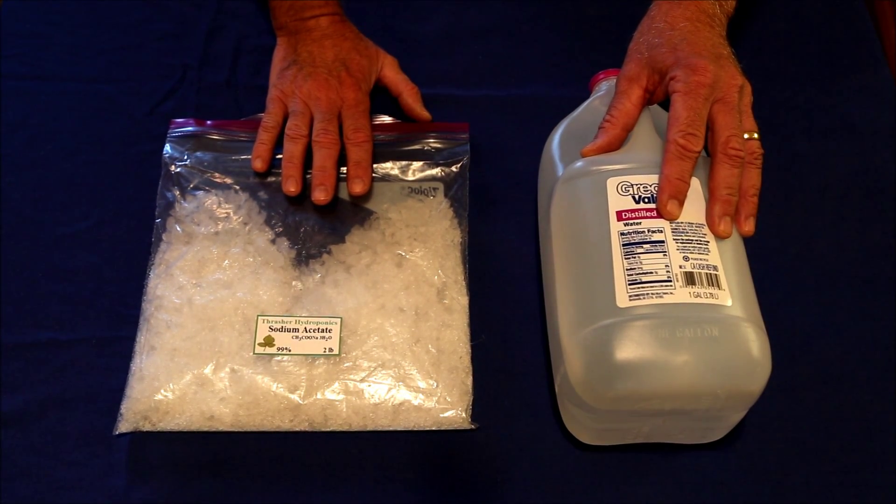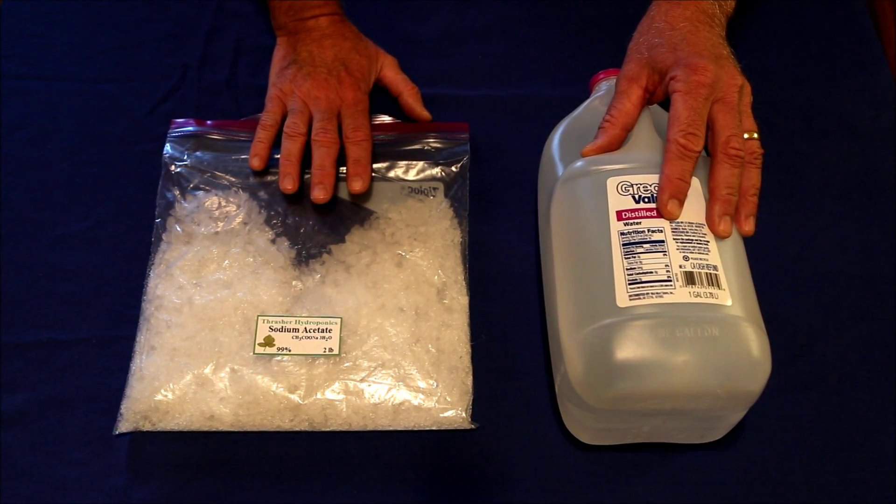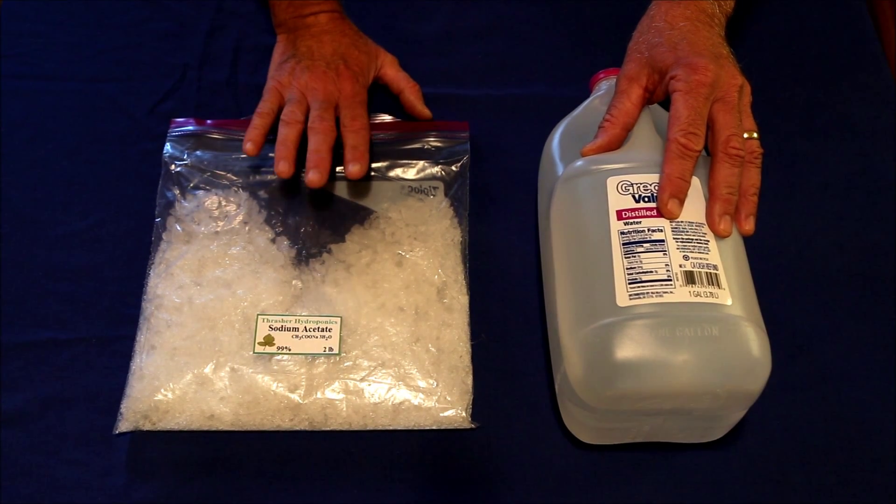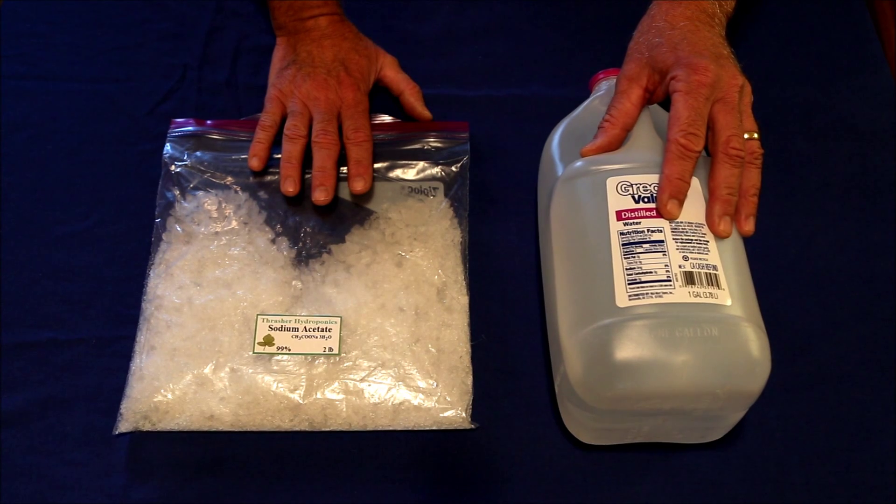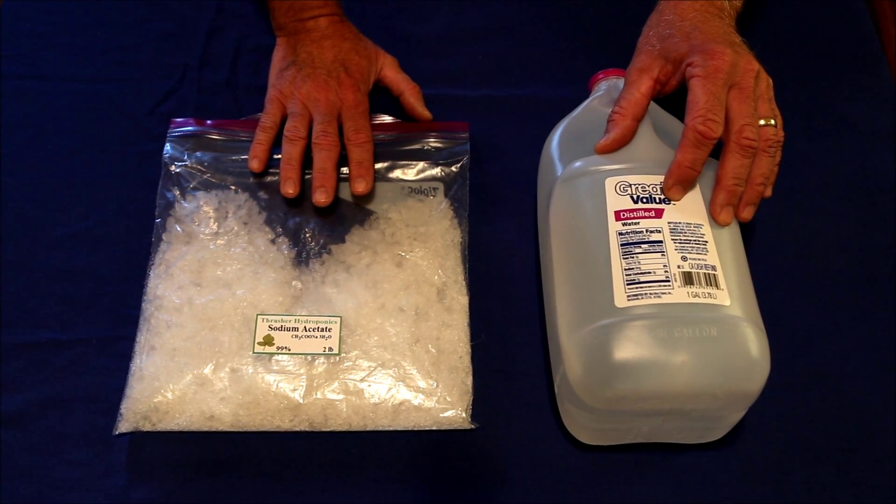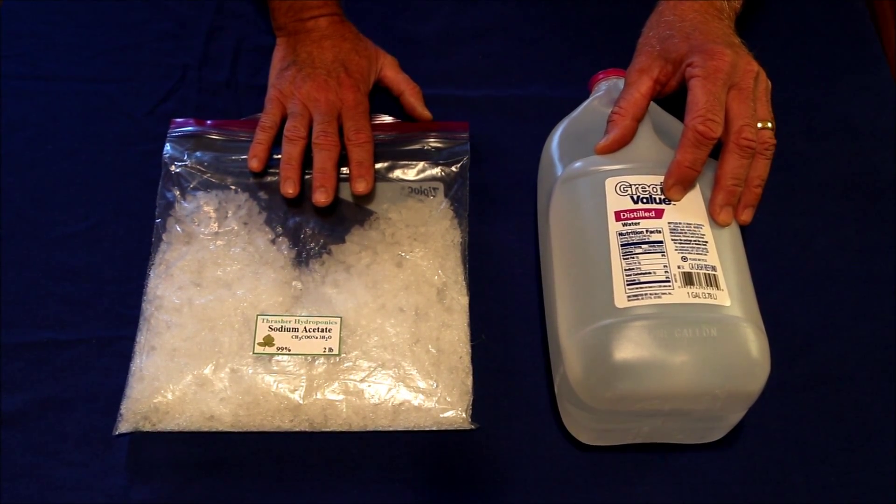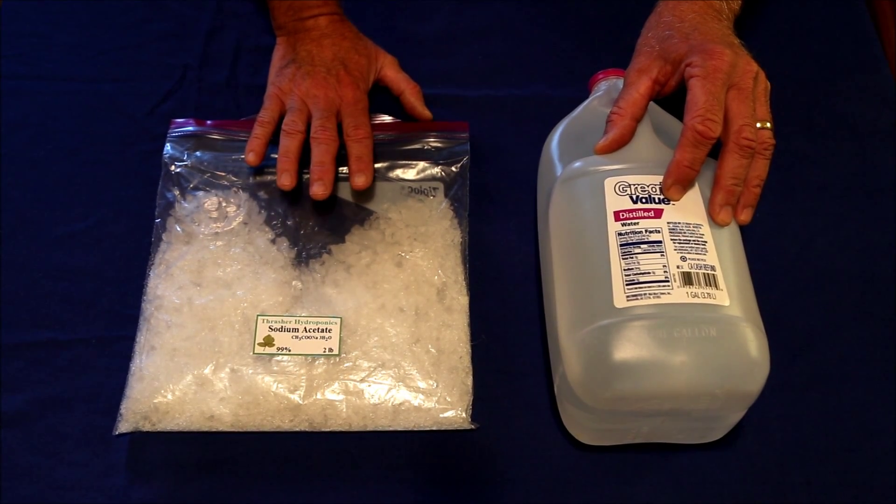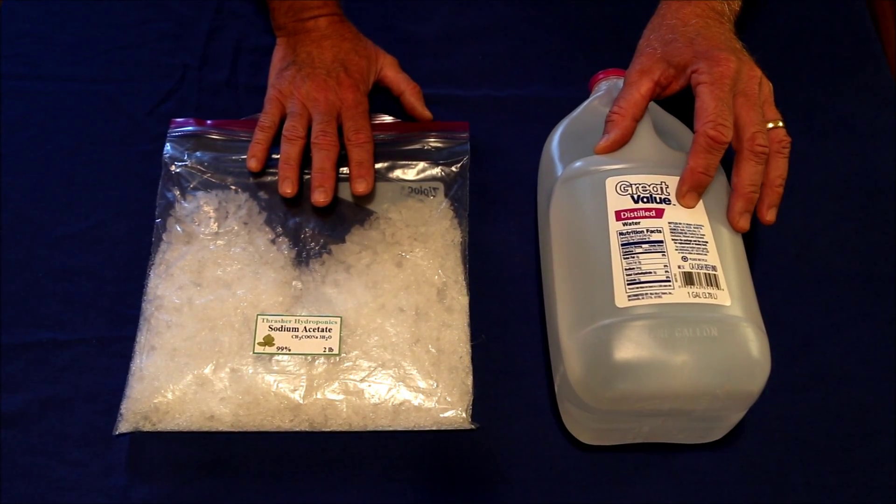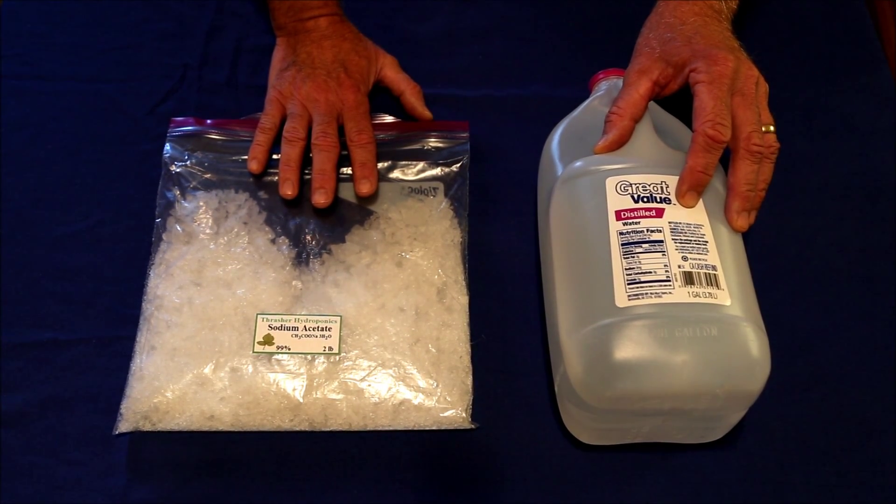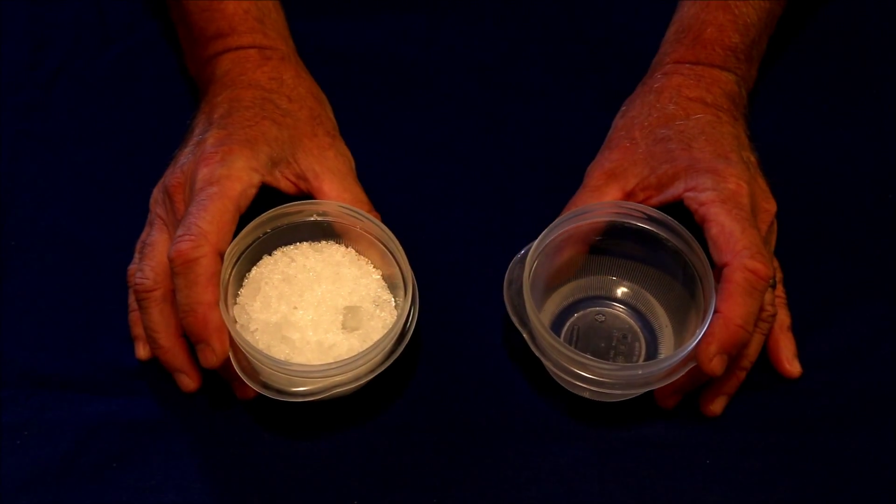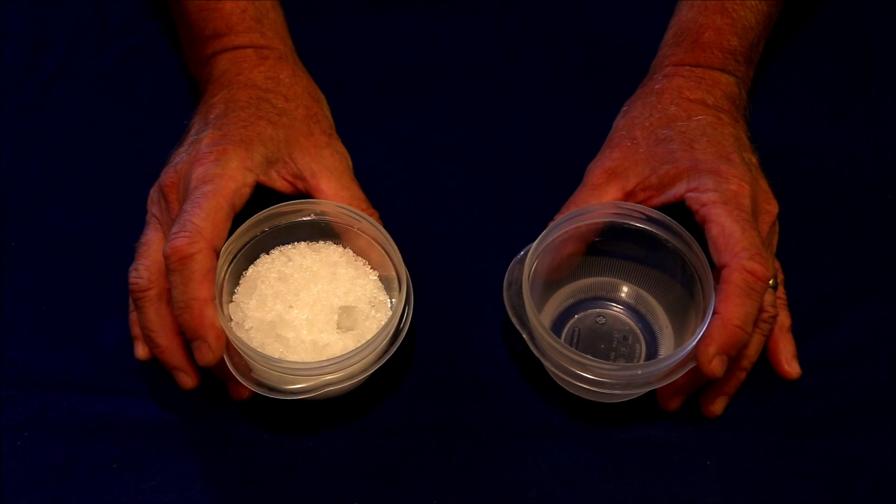The amount of sodium acetate to mix with the water depends on how fast you want the crystals to grow. At a 2:1 ratio—twice as much sodium acetate by weight to water—they'll grow very slowly. At 5:1, they'll grow so fast it's hard to follow the progress. Tailor the concentrations to your particular needs. Pre-measure the water and sodium acetate you want to mix together.